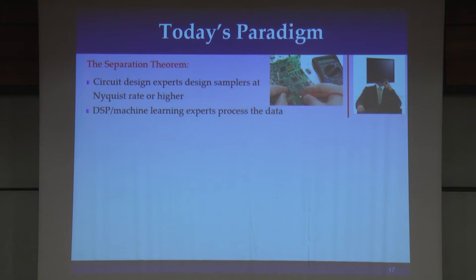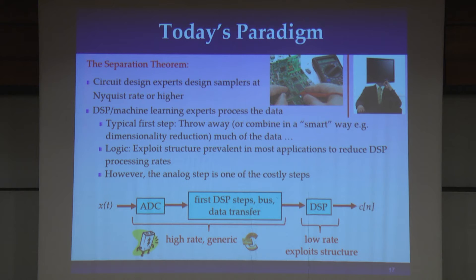Typically, the first thing we do when we get all of this data is that we actually throw it away — not just randomly, but in some smart method. These smart methods have different names depending on the community: in machine learning this is called dimensionality reduction; in signal processing it might be called feature extraction. But all of these are fancy ways of saying we don't actually need all of this data for whatever our task is — so we get rid of it, and then it will be more convenient to process.